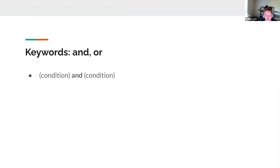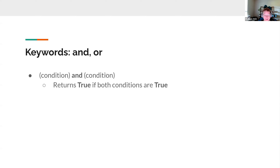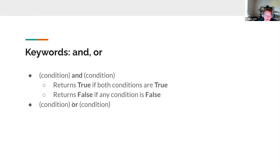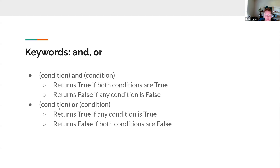Python also includes the keywords 'and' and 'or'. The 'and' keyword checks if two conditions are both true — if both are true, the result is true; it returns false if any condition is false. The 'or' keyword returns true if any of the conditions are true, and false only if both conditions are false.